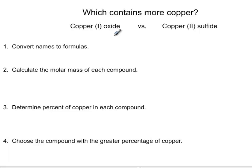So what we're trying to figure out here is which compound, copper(I) oxide or copper(II) sulfide, contains more copper. Now the first thing we need to do is convert the names to actual formulas and then we can focus on molar masses and percents and then compare percentages.